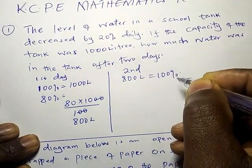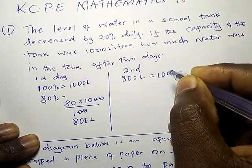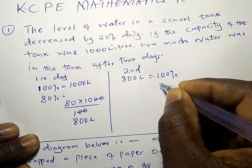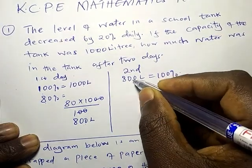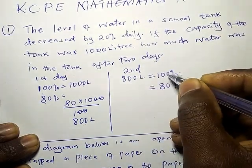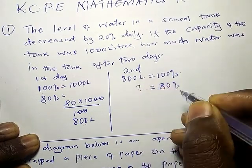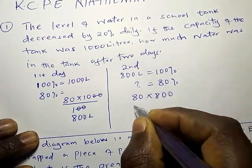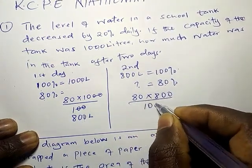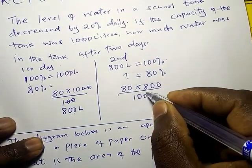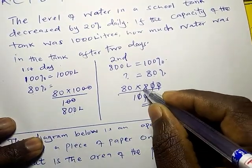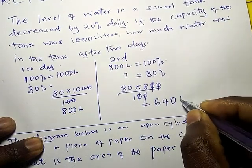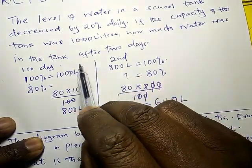Again, water will decrease by 20%, so we will have 100% minus 20%, which gives 80%. We ask: if 800 liters is 100%, what about 80%? It would be 80 times 800 divided by 100. Eight times 8 is 64, so we will have 640 liters after two days.